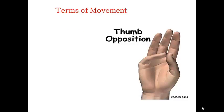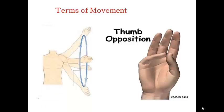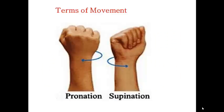Opposition is when you bring the tips of the fingers to the thumb in an act of picking up something, or when we do the religious tasbih. Circumduction is a combination of all four movements: flexion, extension, abduction, and adduction. Lateral rotation is rotating the arm or limb away from the median plane, also known as supination. Medial rotation is the opposite — rotating the limb towards the median plane, known as pronation.